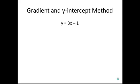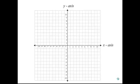The second way to do this is called the gradient and y-intercept method. By looking at the equation, we can determine the gradient and y-intercept. From this equation, we can see that the y-intercept is negative 1 and the gradient is 3. We can then plot a point for the y-intercept at y equals negative 1.